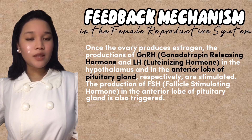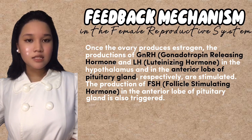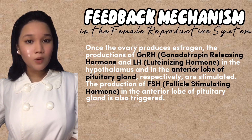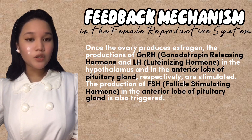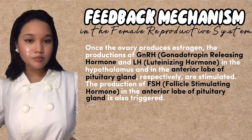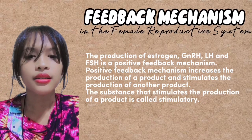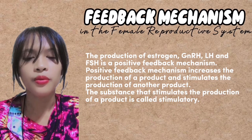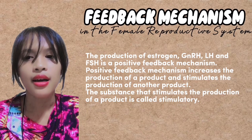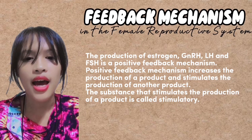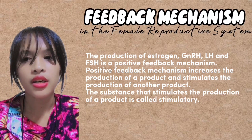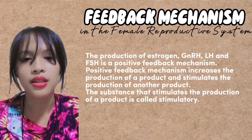The production of FSH, or follicle-stimulating hormone, in the anterior lobe of the pituitary gland, is also triggered. The production of estrogen, GnRH, LH, and FSH is a positive feedback mechanism.